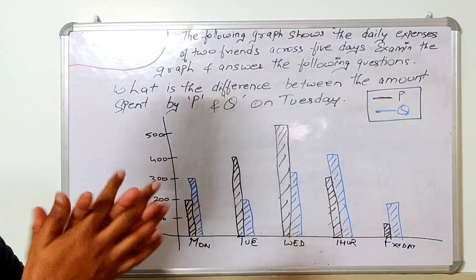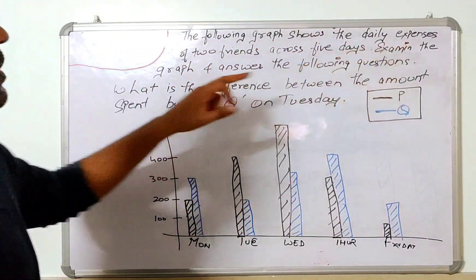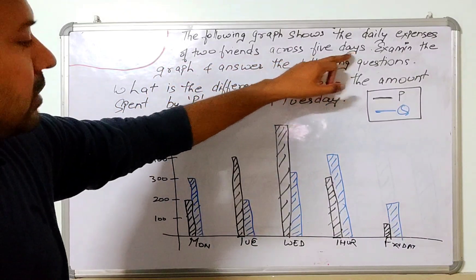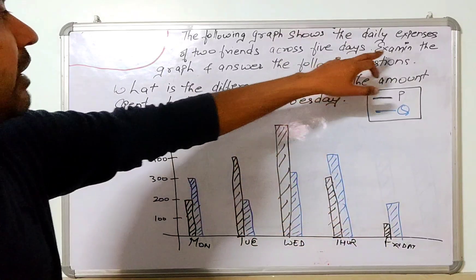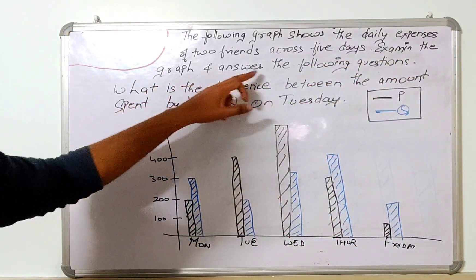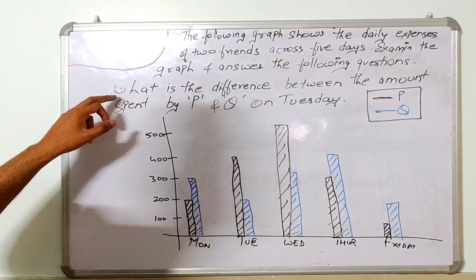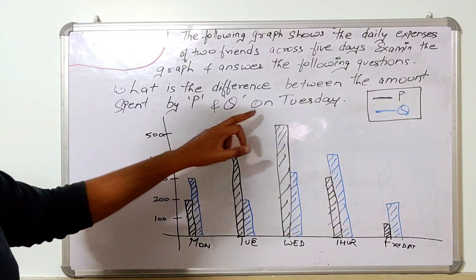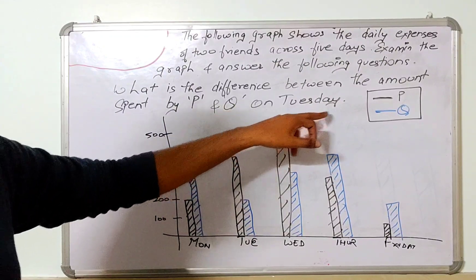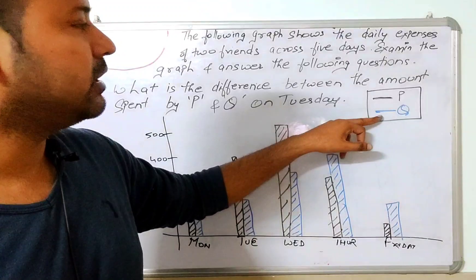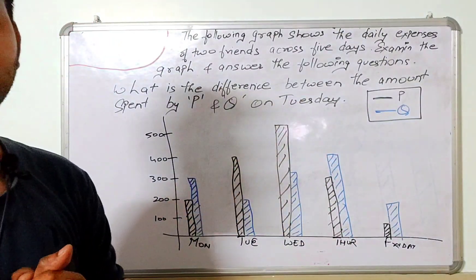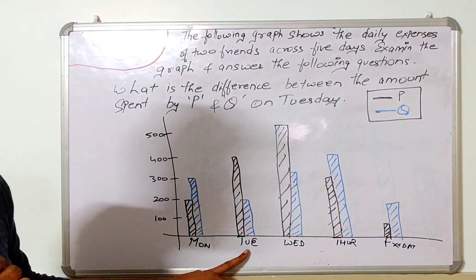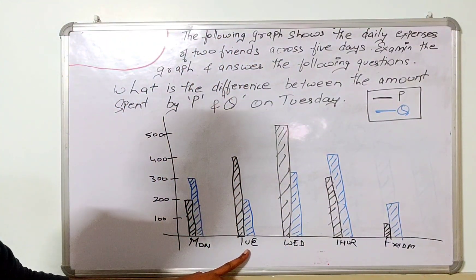Now again one more easy question was there. Let me show you once again. So now in this question, what has been said: the following graph shows the daily expense of two friends across five days. These are the five days: one, two, three, four, five. Examine the graph and answer the following question. Now the question is, what is the difference between the amount spent by P and Q on Tuesday. Now P is marked with black and Q is marked with blue.